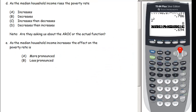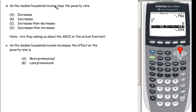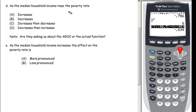For the next question: as the median household income rises, the poverty rate increases, decreases, increases then decreases, or decreases then increases? Thinking about it with common sense — as household income goes up, fewer people live below the poverty line, so the poverty rate decreases. The correct answer is D.